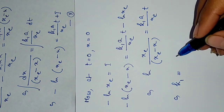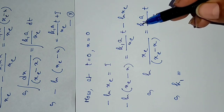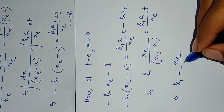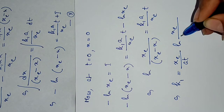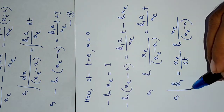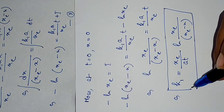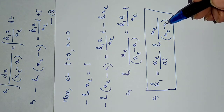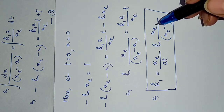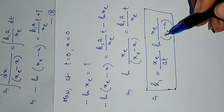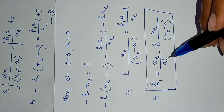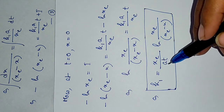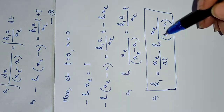Solving for k1: k1 = (x_e / a·t)·ln[x_e / (x_e - x)]. To use this, we measure the concentration of B at any time t to get x, measure the equilibrium concentration of B to get x_e, and use the known initial concentration 'a'. This gives us the forward rate constant k1.